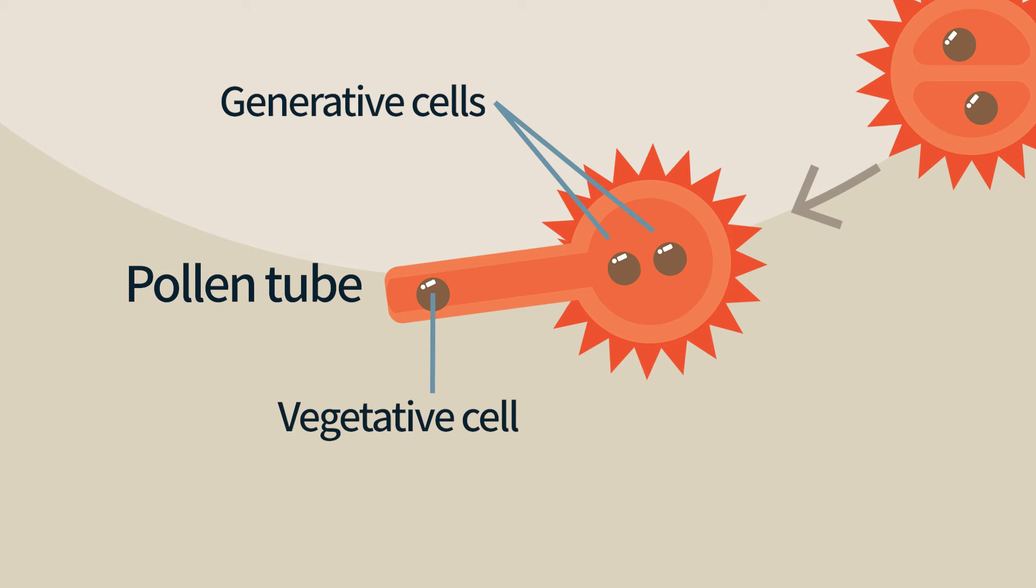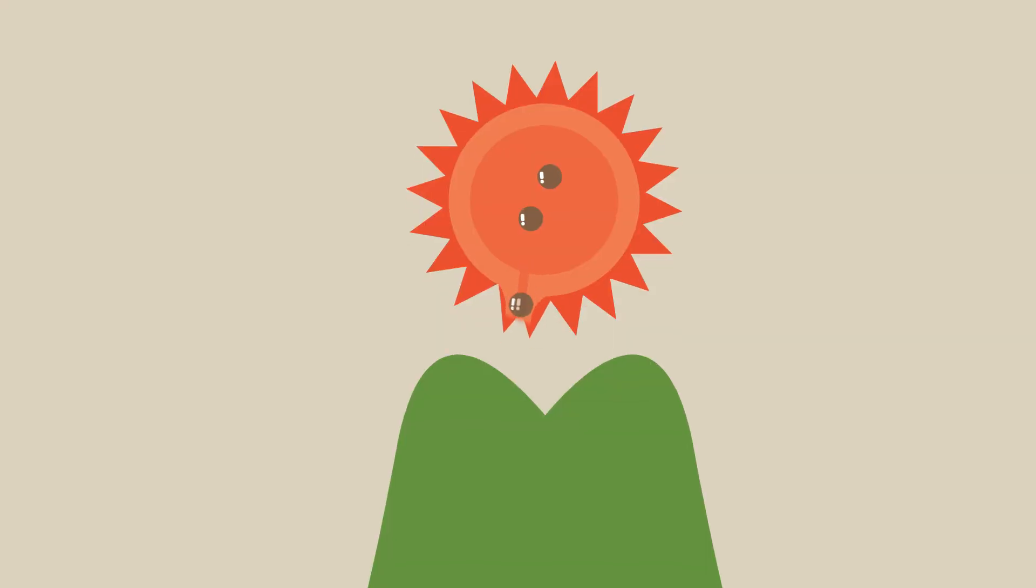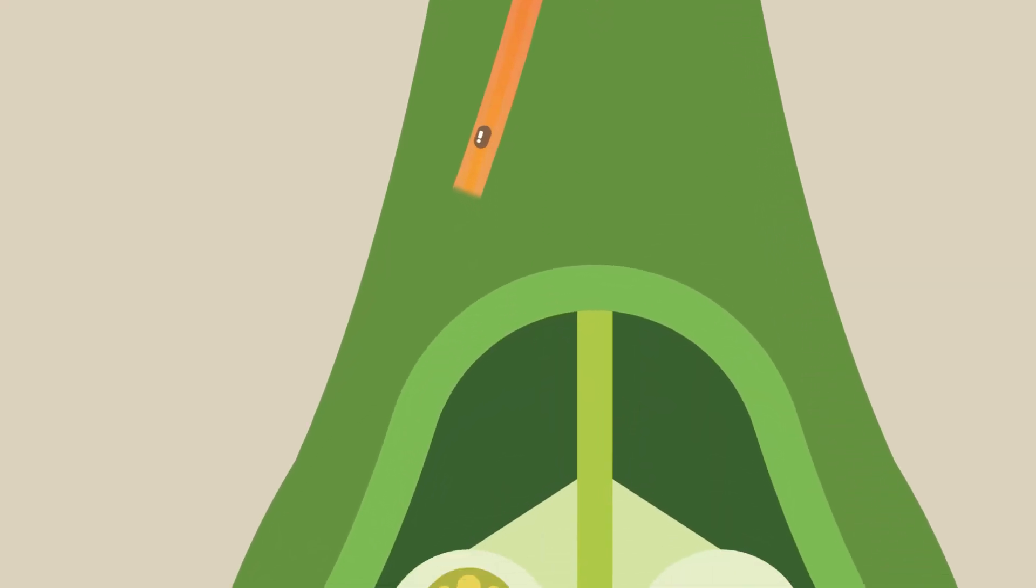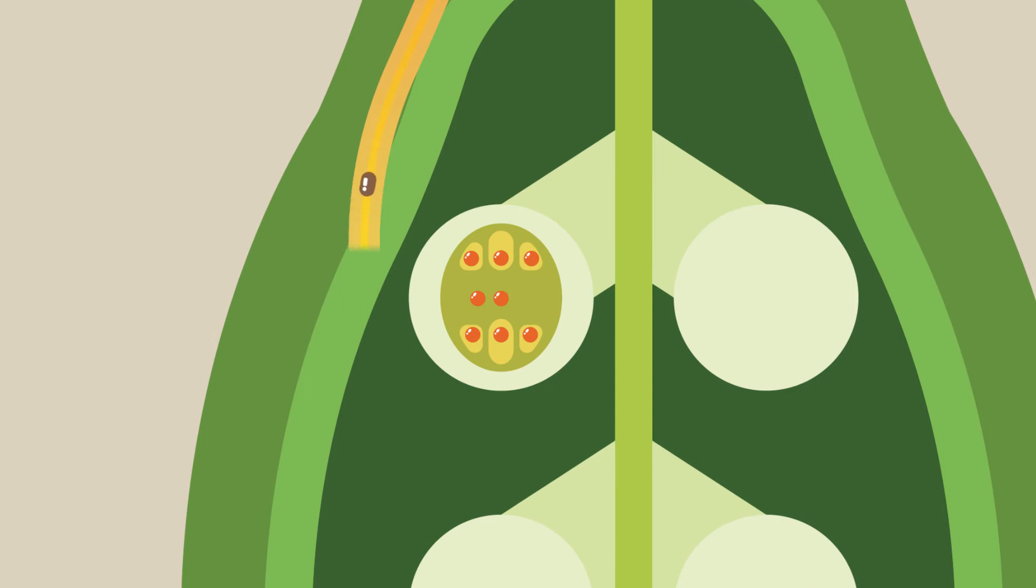The vegetative cell that does not take part in fertilization, and two generative cells. One of these cells will fuse with the egg and fertilize it, giving rise to a diploid cell from which the embryo will develop.